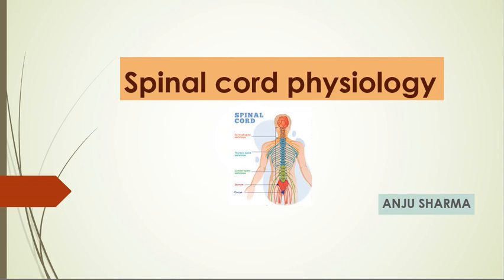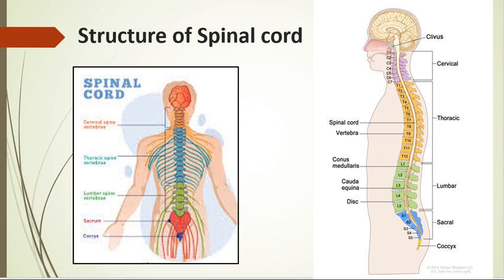Today's video is about spinal cord physiological aspects. We are reading spinal cord because to understand the nervous system we should be very clear about the structural aspect of spinal cord. Starting with structural aspects: the central nervous system is composed of brain and spinal cord.